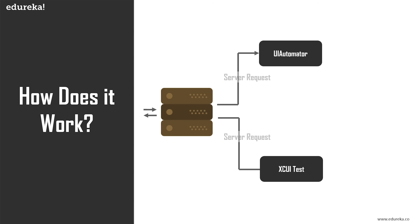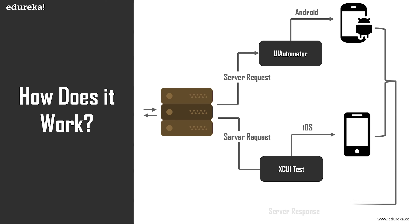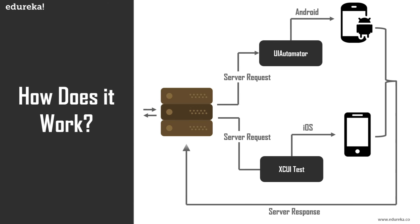Appium sends requests regarding automation testing to the Appium server. The Appium server distinguishes between iOS requests and Android requests — you can learn how by looking at the Appium architecture video. After the requests are distinguished, they are sent to their respective architectural components: an Android request is sent to the UI Automator, and an iOS request is sent to the XCUITest APIs. These requests are then sent to the real device, emulator, or simulator where the test scripts are executed. The results are sent back to the server and ultimately returned to the Appium client as server responses and test case logs.